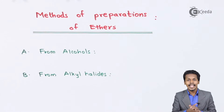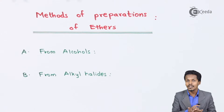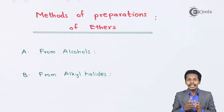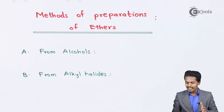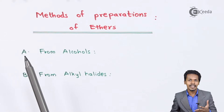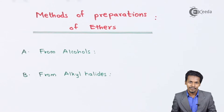The other method is that alcohol can also be converted to ether by treating the alcohol with diazomethane. So in that method also we can prepare ether. That was related to the example where we can convert the alcohol to ether.